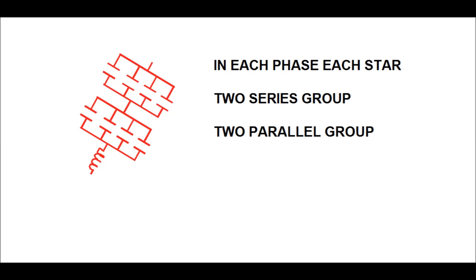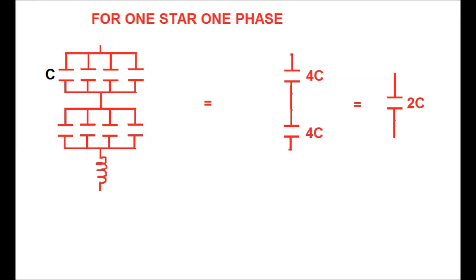Therefore in each phase in each star connection there exist eight capacitors. In total there exist 8 × 6 = 48 capacitor units in the 20 MVAR capacitor bank. Now we want to calculate the equivalent capacitance for one star, one phase, if each unit capacitor has value C.